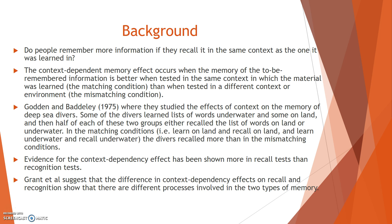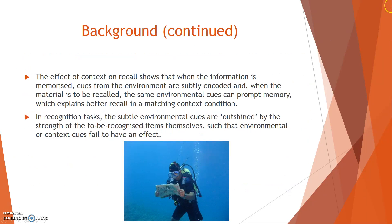Evidence for the context-dependency effect has been shown more in recall tests than in recognition tests. Grant et al suggests that the difference in context-dependency effects on recall and recognition show that there are different processes involved in the two types of memory. The effect of context on recall shows that when information is memorised, cues from the environment are subtly encoded, and when material is to be recalled, the same environmental cues can prompt memory, which explains better recall in a matching context condition. In recognition tasks, the subtle environmental cues are outshined by the strength of the to-be-recognised items themselves, such that environmental or context cues fail to have an effect.